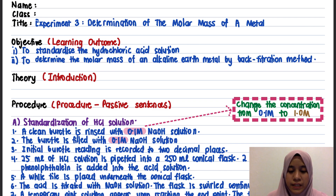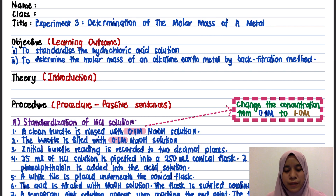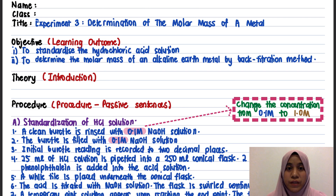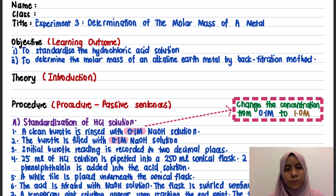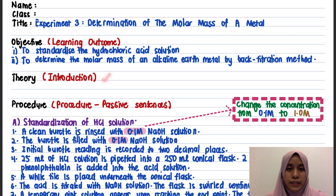The alkaline earth metal is a Group 2 element — for example, beryllium, magnesium, and calcium. By the end of the experiment, when we calculate, we can determine which metal was actually used. For the theory section, it is based on the introduction — you just copy and paste from your introduction.